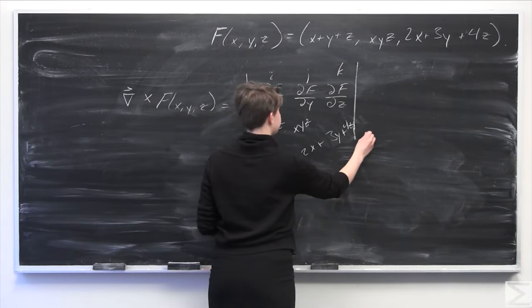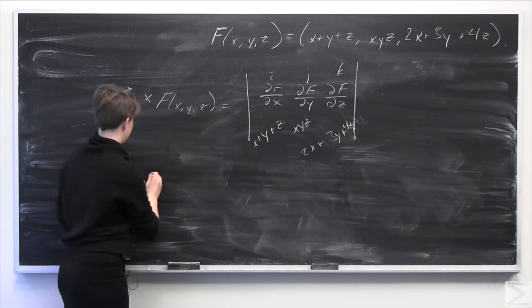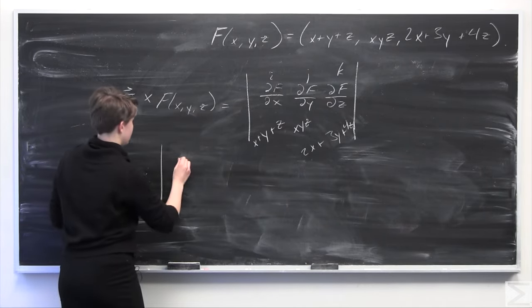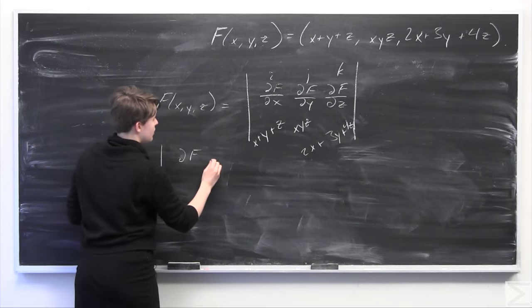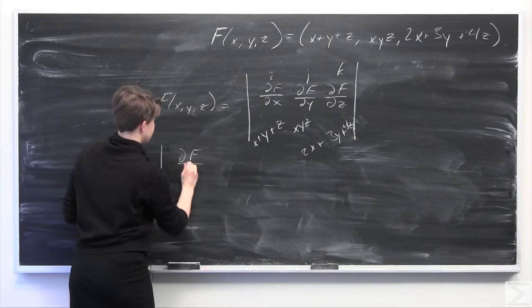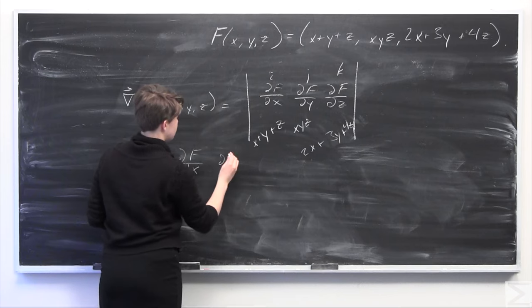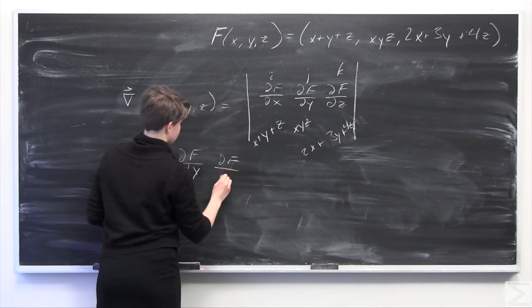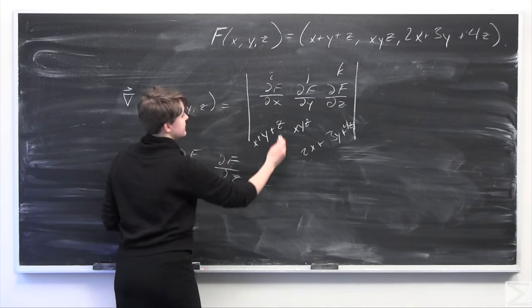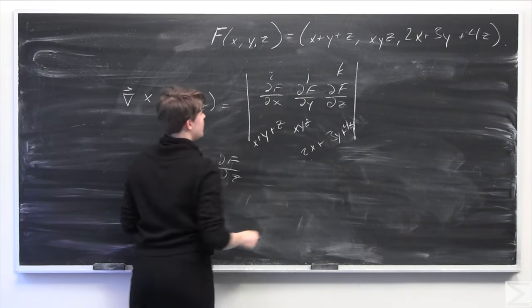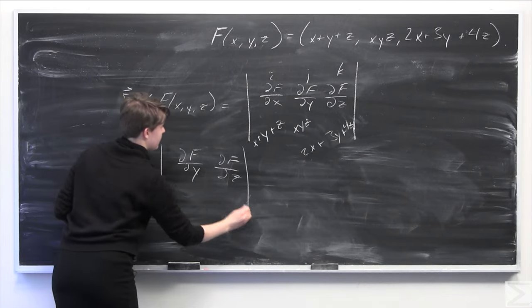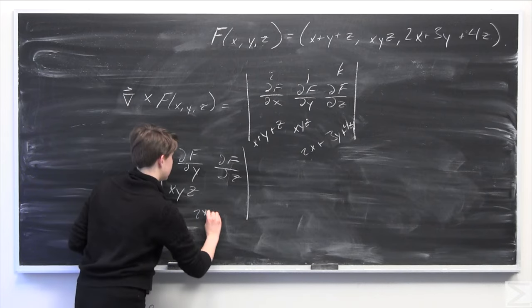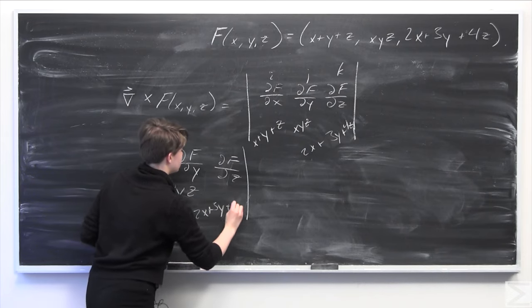The determinant gives us: i times the determinant of the 2x2 submatrix formed by canceling out the first column and first row, which has ∂/∂y, ∂/∂z in the top row and xyz, 2x plus 3y plus 4z in the bottom row.